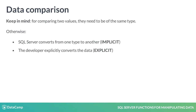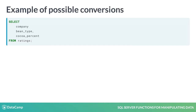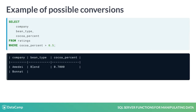Let's start with some examples and figure out what conversions can be done automatically. Say you have this simple query from the ratings table. The COCOA percent is a decimal column, and you want to restrict the results by adding a WHERE clause to compare the percentage to several values. This code obviously works and will return a list with all the percentages greater than 0.5.